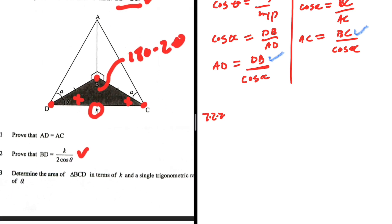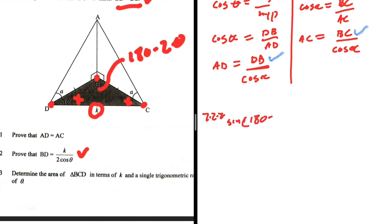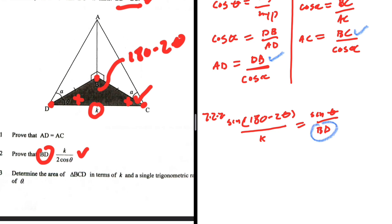Applying the sine rule: sin(180° − 2θ)/k = sin(θ)/BD. Cross-multiplying gives BD·sin(180° − 2θ) = k·sin(θ). Since sine is positive in the second quadrant, sin(180° − 2θ) = sin(2θ).